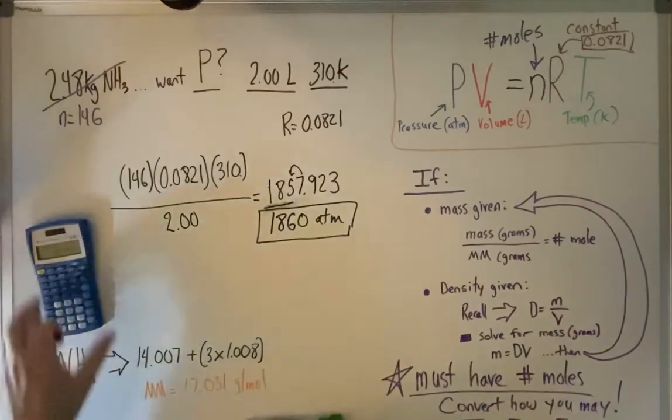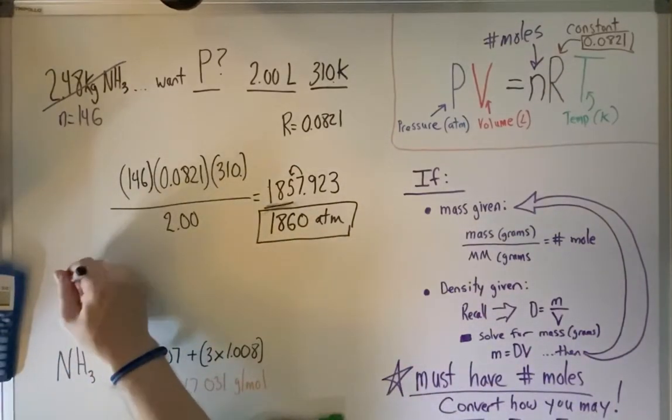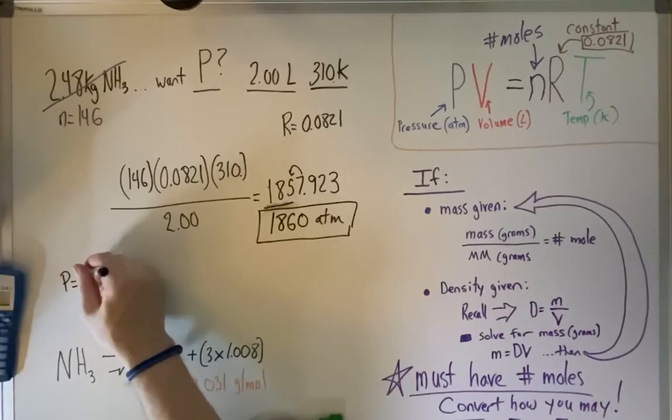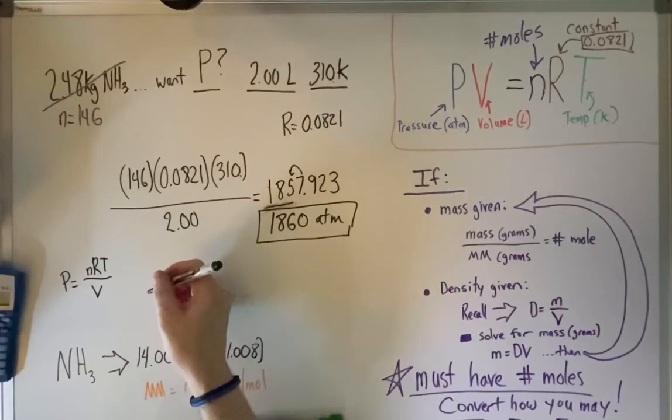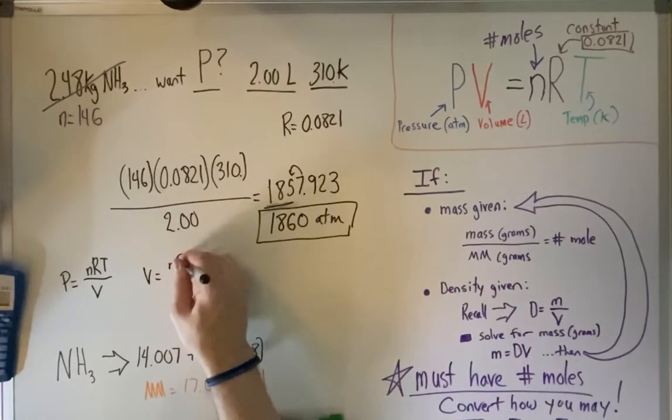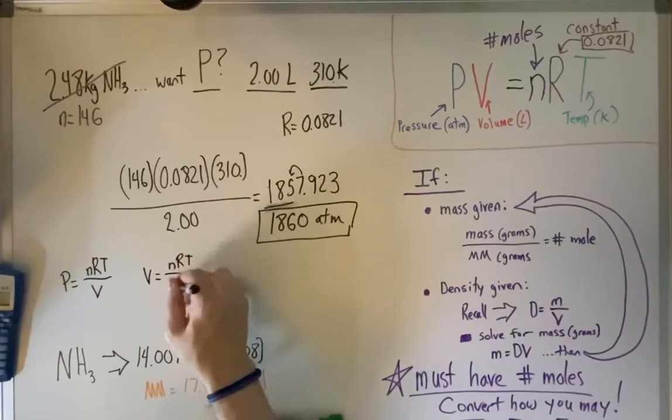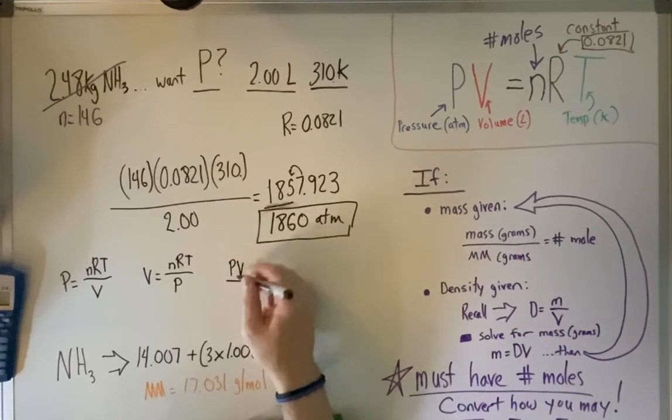So solving for P, let me show you how this looks. So P is equal to nRT divided by V. And if you're solving for volume, it's going to be volume is equal to nRT divided by P. If we're solving for N, it's going to be PV over RT equals N.